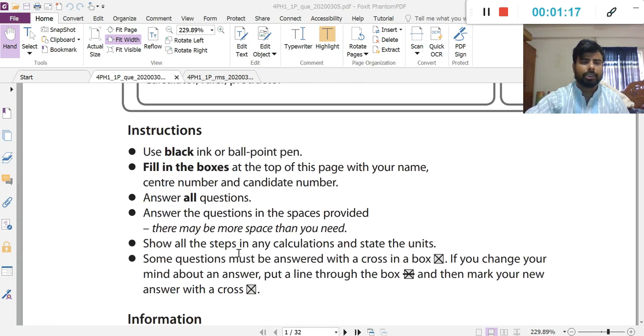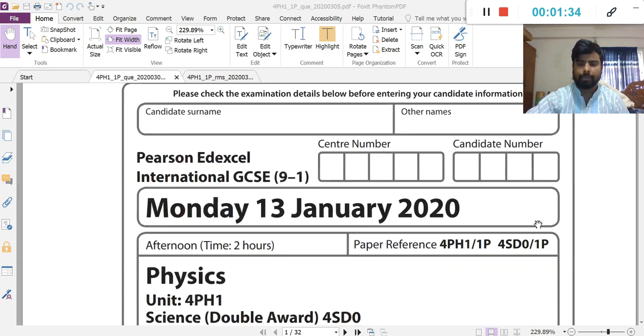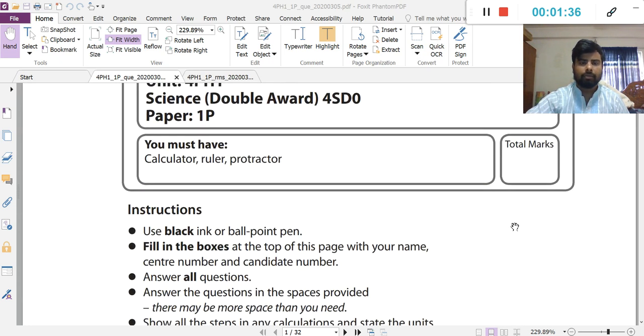There are some instructions here. Use black ink or ballpoint pen. Fill in the boxes at the top of this page with your name, candidate surname or other's name, center number, candidate number. You must have calculator, ruler and protractor. Remember.